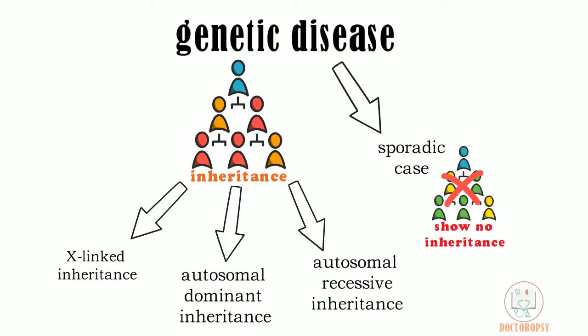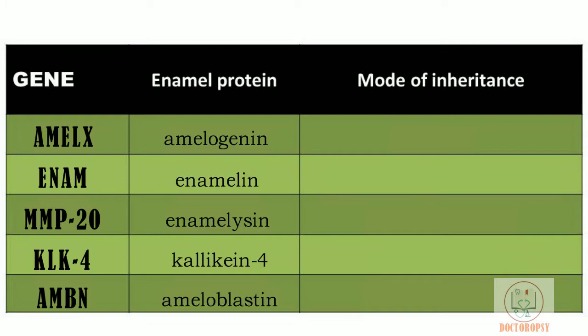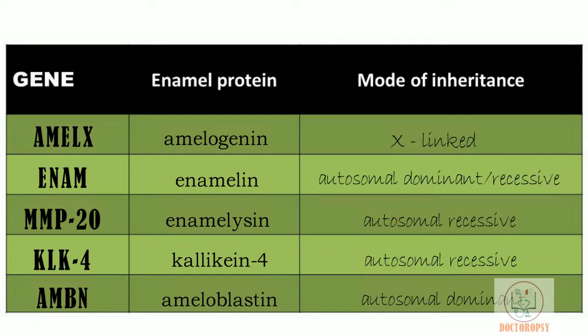Since different genes are involved, amelogenesis imperfecta can be inherited in an X-linked manner, or as an autosomal dominant trait, or autosomal recessive trait. Sporadic cases have also been reported with no genetic linkage to parents. This table shows some of the genes that are known to be mutated, which code for various enamel proteins and cause amelogenesis imperfecta, inherited in different patterns.